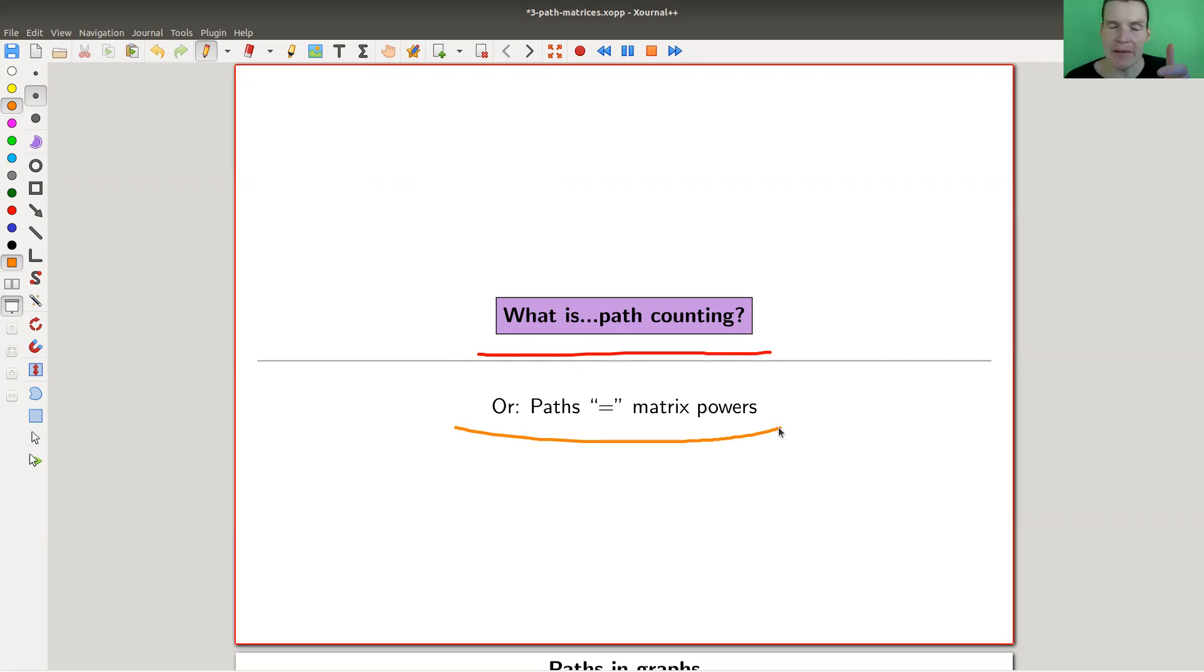Again, the whole point about algebraic graph theory is to find linear algebra or algebra methods to do graph theoretical problems. An obvious graph theoretical problem would be to count paths and there's a really strikingly beautiful answer. Stay with me here. We need about seven minutes to get there, but it will be quite beautiful.